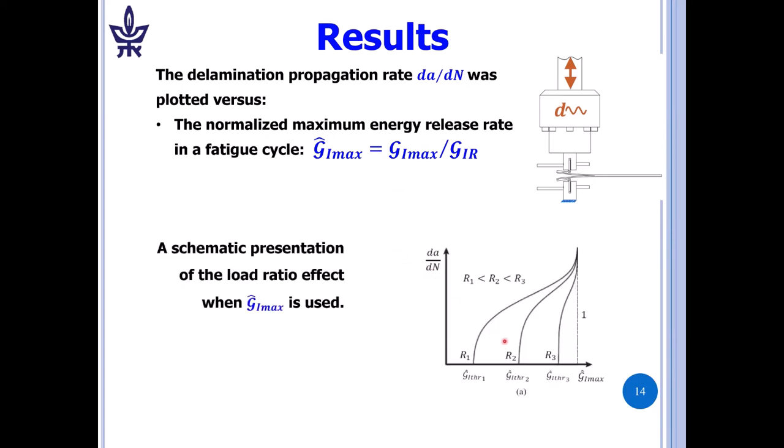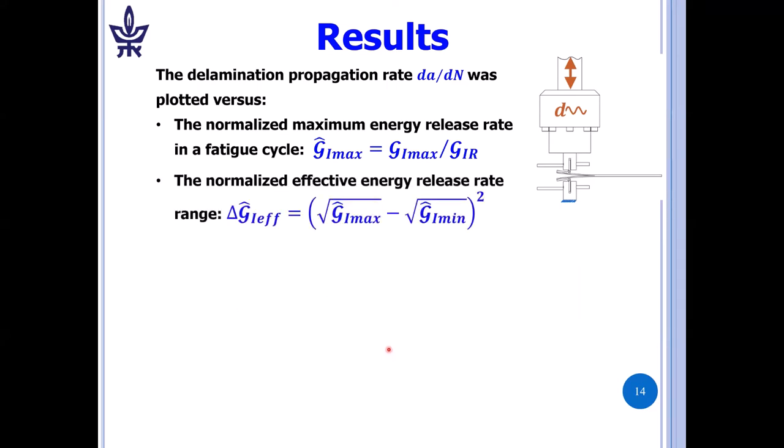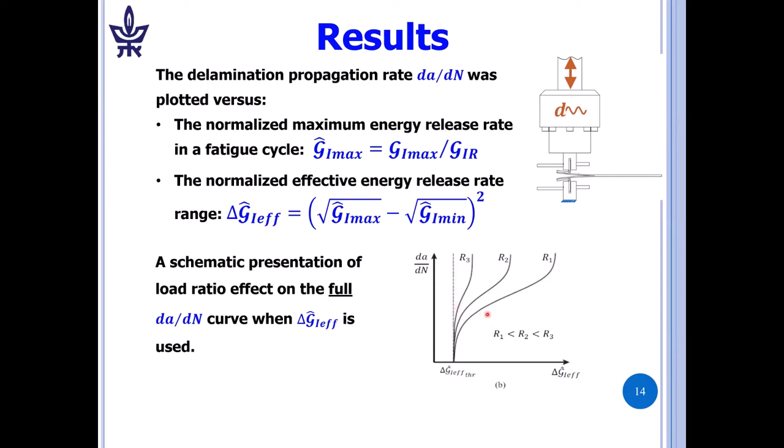If we plot da/dN versus G1max, then this is the kind of behavior we get for different r ratio. We get different thresholds, different threshold values, but we get a behavior that some people are unhappy with because we get something that's counterintuitive. As r decreases, da/dN increases, and we're used to thinking of it for metals in the opposite direction. But if you use Kmax, K1max to plot metallic properties, you get the same behavior. So it's just that it's counterintuitive, but it's not incorrect. But if we go to delta G1 effective, where we're using the hat quantities, and we plot schematically, we get the right direction of behavior as r increases, da/dN increases for the given delta G1 effective. And we come to the same threshold, which is an advantage for us.